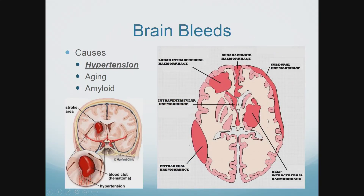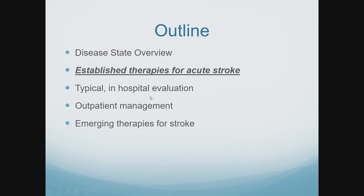The ones most important for you all are amyloid-related lobar bleeds. Why are those important? Because that patient could bleed for no good reason — even if their blood pressure is well controlled — and if that patient is on anticoagulation they're at much higher risk of re-bleeds. So pay attention to lobar hemorrhages.